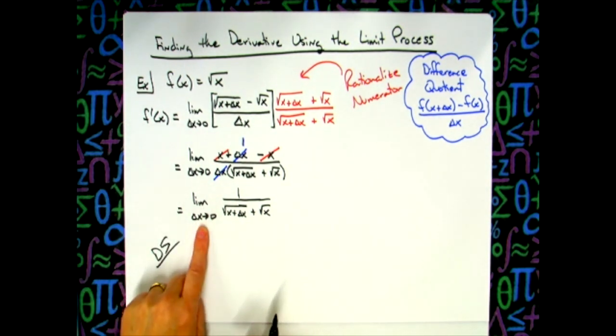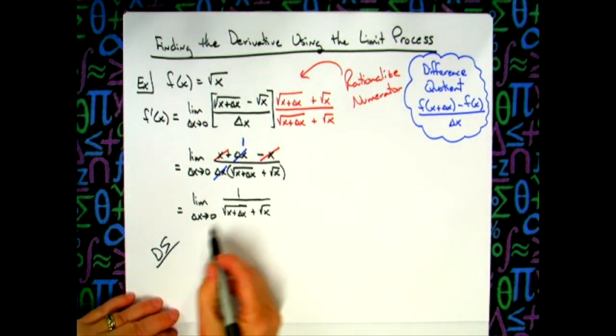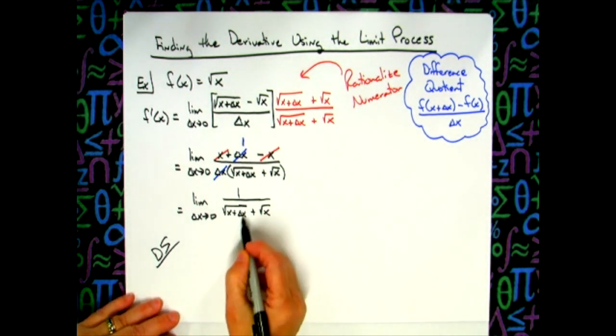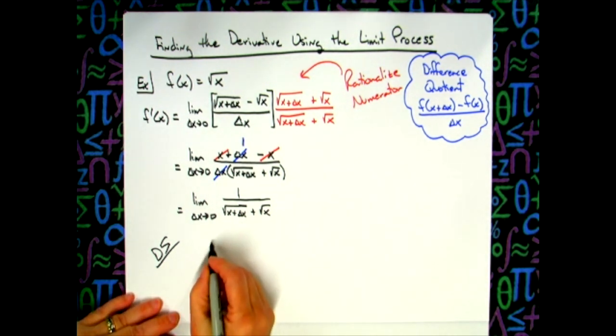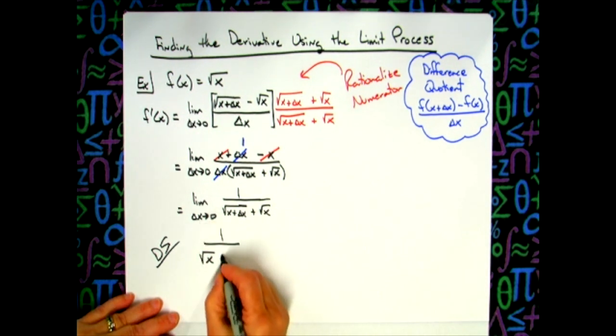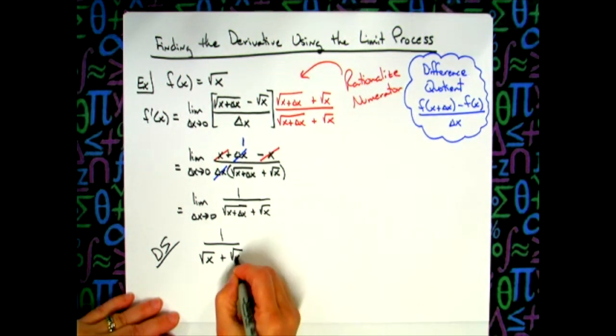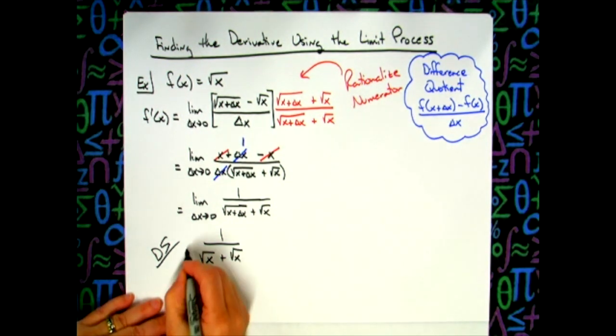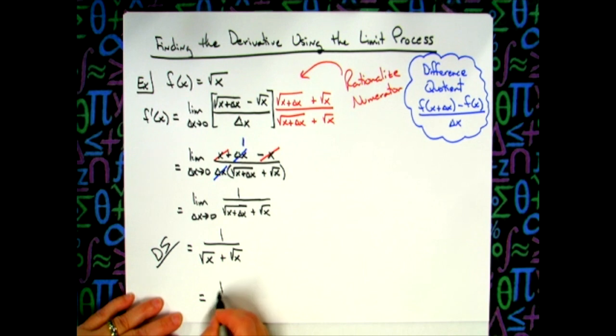I'm going to take my limit notation away because at this point I'm actually taking the limit. I'm going to replace that delta x with zero. So this term will become zero. So I will have one over the square root of x because I replaced zero, plugged it in, plus square root of x, and then that's going to simplify down to one over two square root of x.